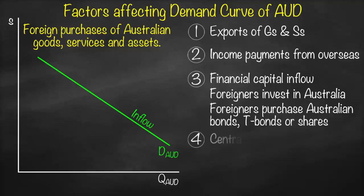Another example is central bank purchases of Australian dollar. If the Reserve Bank of Australia (RBA) buys Australian dollars, that constitutes demand, so it will shift the demand curve.